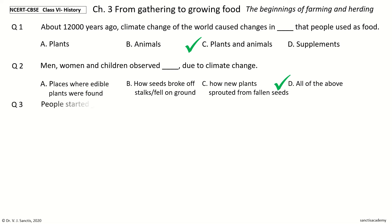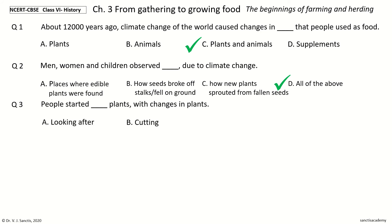Question 3. People started doing what to plants with changes in plants. The options are: looking after; cutting; burning; gathering. And the answer is looking after.